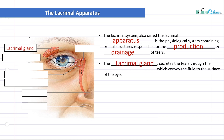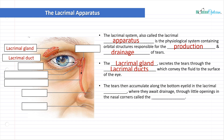The lacrimal gland - you'll notice on the diagram as labels start to pop up - is that bean-shaped gland superior to the eye. It secretes the tears through the lacrimal ducts, which convey the fluid to the surface of the eye and bathe the cornea. The cornea needs nourishment and dissolved oxygen from the tears. Tears that accumulate along the bottom of the eyelid collect in the lacrimal lake, where they eventually await drainage through little openings in the nasal corners called the puncta. There are two per eye - one on the superior eyelid and one on the inferior eyelid.